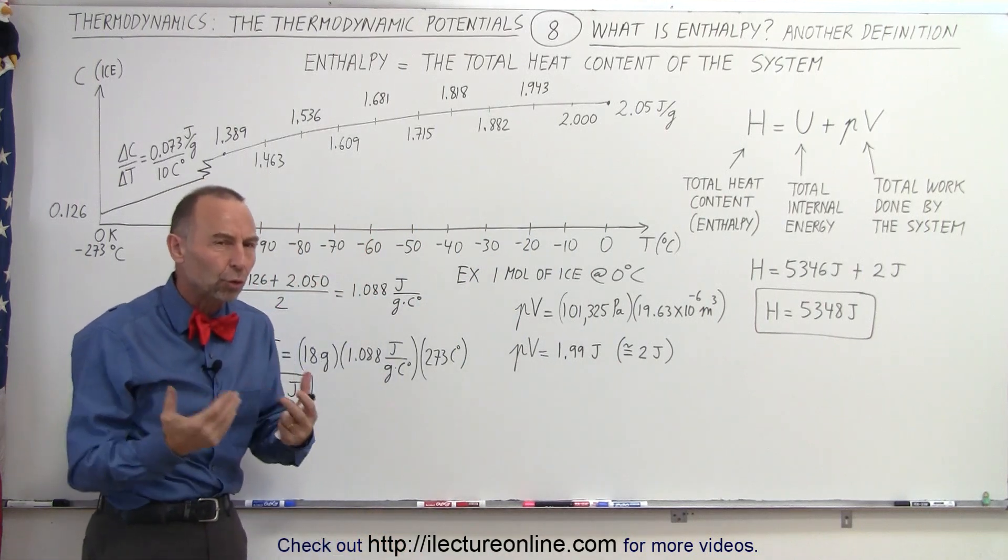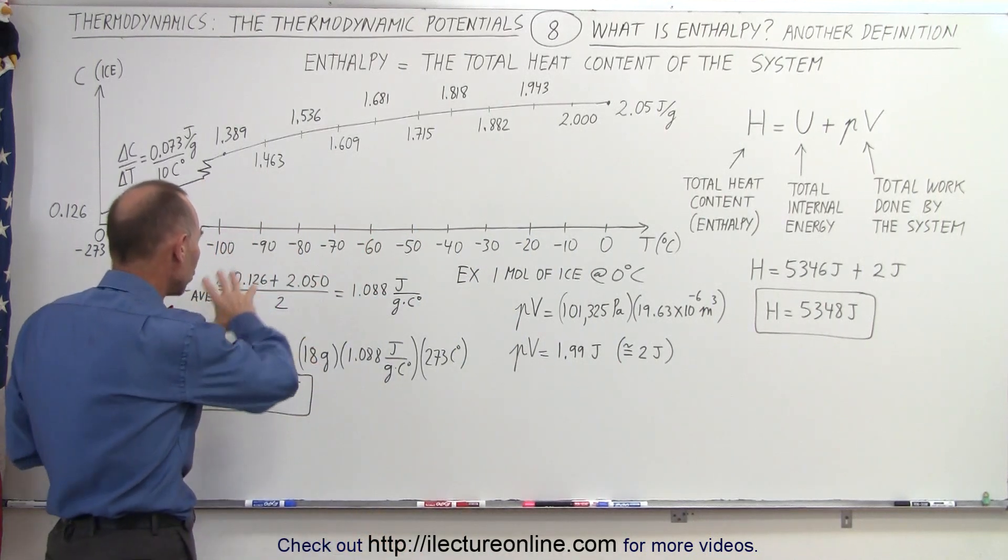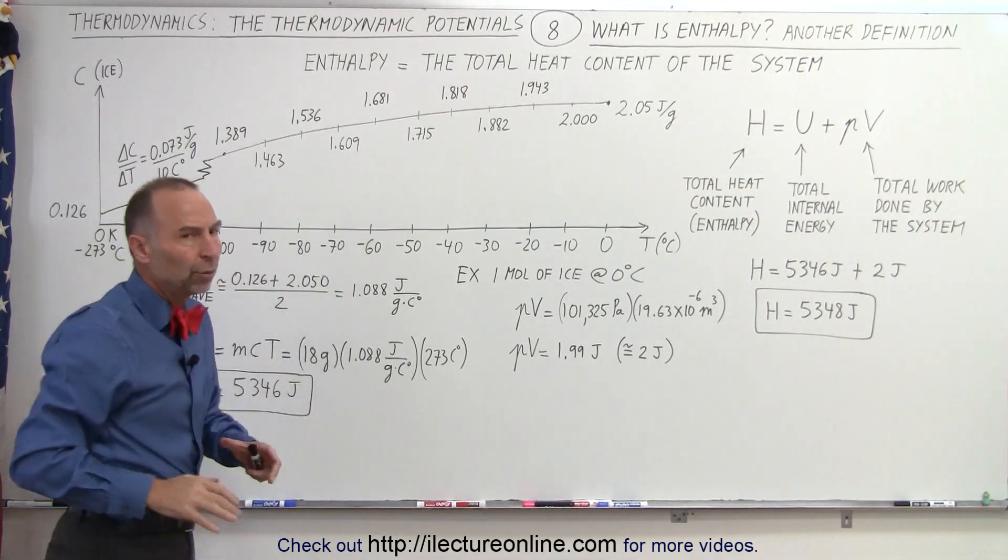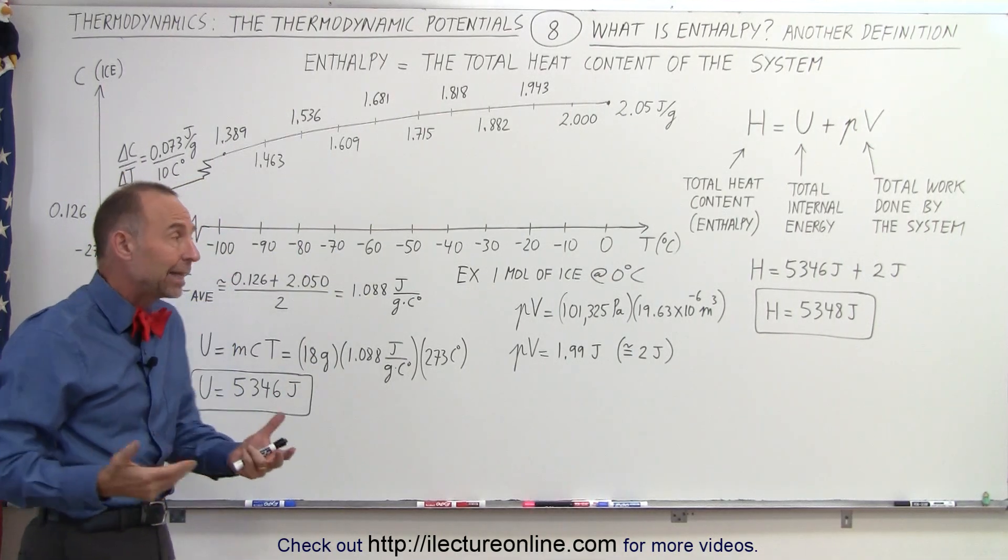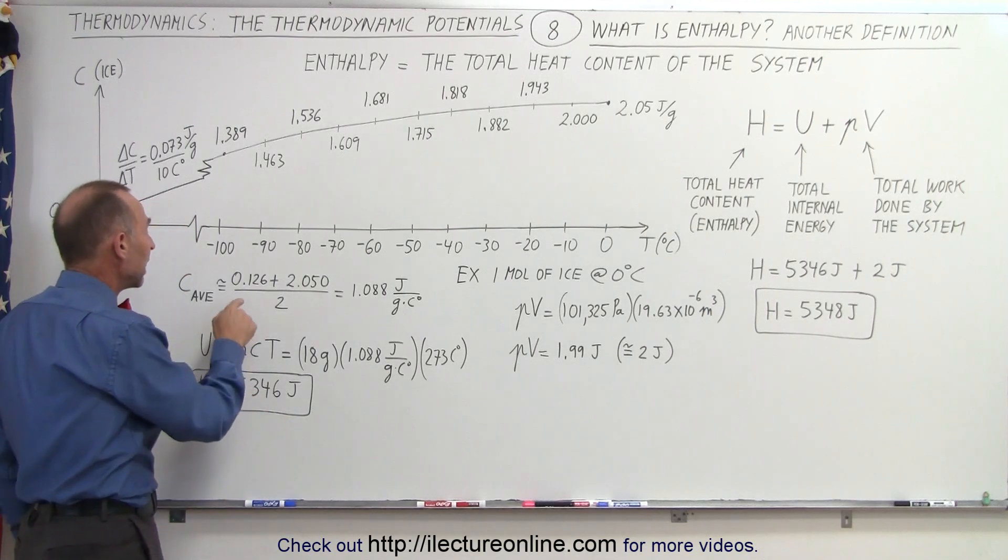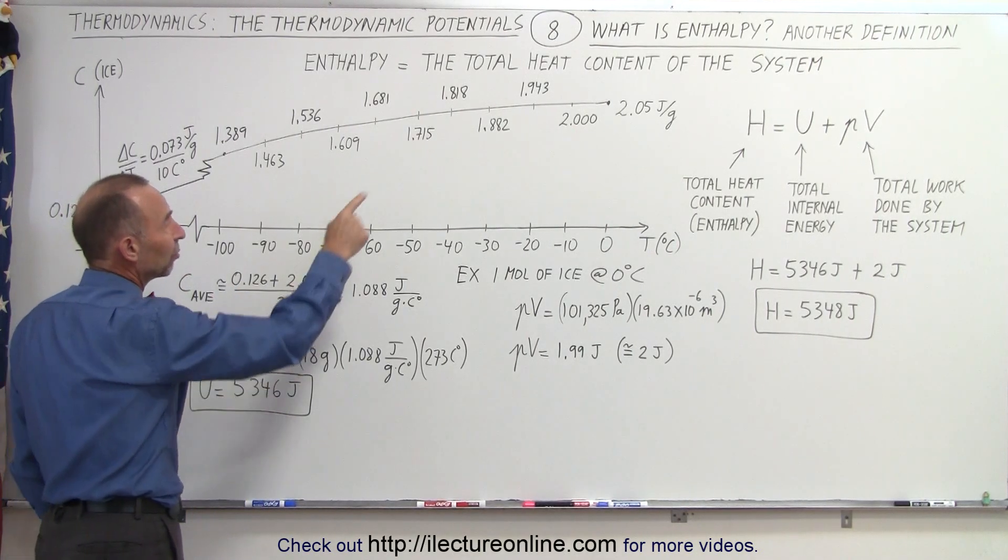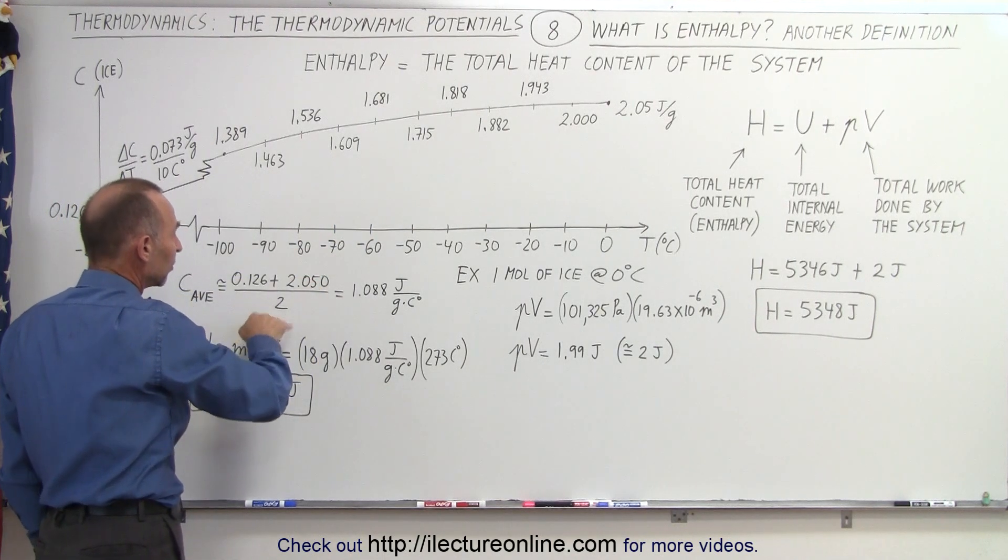So we know that to find the total heat content, or I should say the total internal energy, we should actually integrate underneath this curve. We're just going to approximate it by taking the rough average. We're going to take the specific heat at zero Kelvin and the specific heat at zero degrees centigrade, add them together, divide it by two.